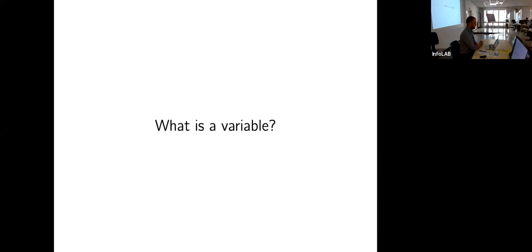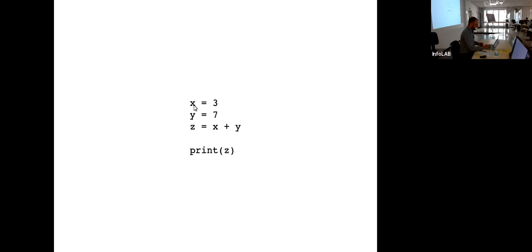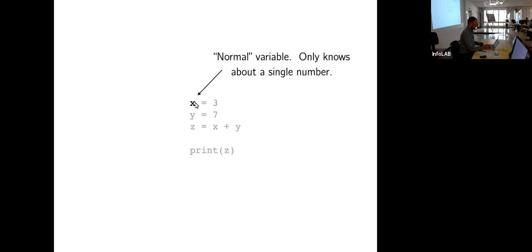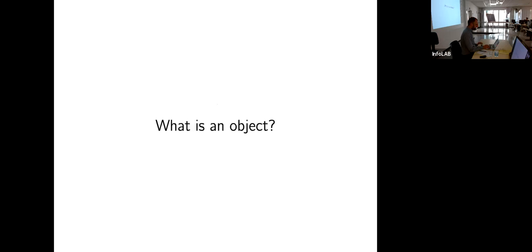Since some of you might not be familiar with object-oriented programming, let me spend a minute on this. So this is what the code looks like: x is 3, y is 7, and z is x plus y. This x is what I would call a normal variable — it only knows about a single number. x knows it's 3, z knows it's 10, and it doesn't know anything else about itself.